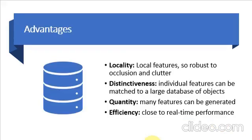Advantages of SIFT are that it uses local features which are robust to occlusion and clutter. Second, individual features can be matched to a large database of objects. This means that many features can be generated for even very small objects, and this algorithm is close to real-time performance.